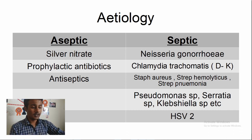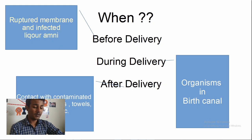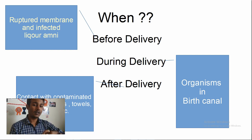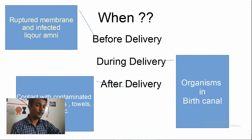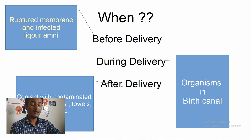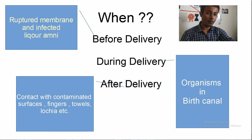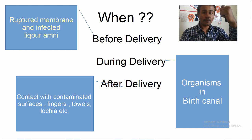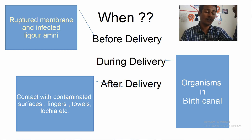Why herpes simplex 2 and not 1? Because the baby is passing through the genital tract, there's a chance of acquiring infection from the birth canal if the mother is infected — so we're looking at HSV-2. Infection can occur before delivery (transplacentally), during delivery (from the birth canal), or after delivery through immediate contact contamination of the baby's eyes via contaminated surfaces, fingers, towels, or birth canal secretions.